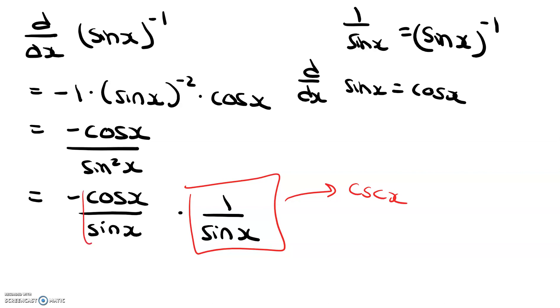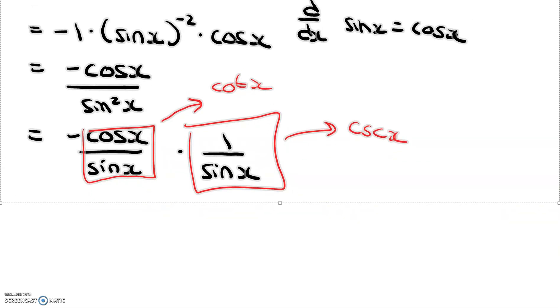And cosine x over sine x, well, that's the same as saying cotangent x. So, if I were to simplify this, oops, my keyboard moved, sorry. If I were to simplify this, I could basically say negative cotangent x times cosecant x.